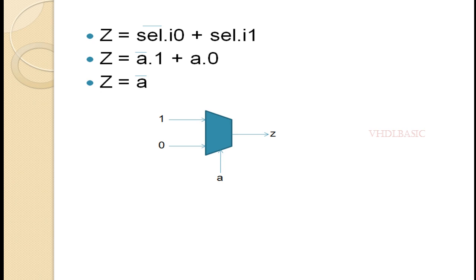If you see the expression: z equals (a bar AND 1) OR (a AND 0). If you resolve this boolean equation, a AND 0 will be 0, and whatever you AND with 1, that will reply - that will come again. So a bar will be the output of this expression.